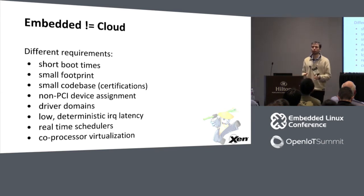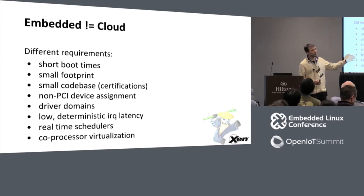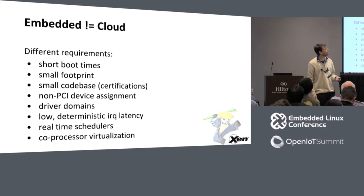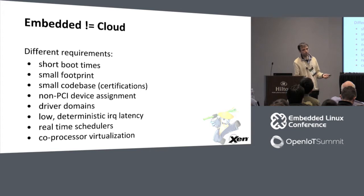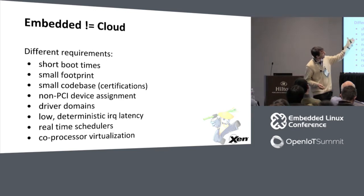Xen is popular on cloud and servers, but does it actually fit the bill for embedded platforms? These are very different environments with different requirements. I'm going to list some requirements unique to embedded, and then in the later part of the talk show how Xen meets them. The first two — short boot times and small footprint — are obviously needed on embedded, but don't hurt on servers either. The following ones, however, are certainly unique to embedded.